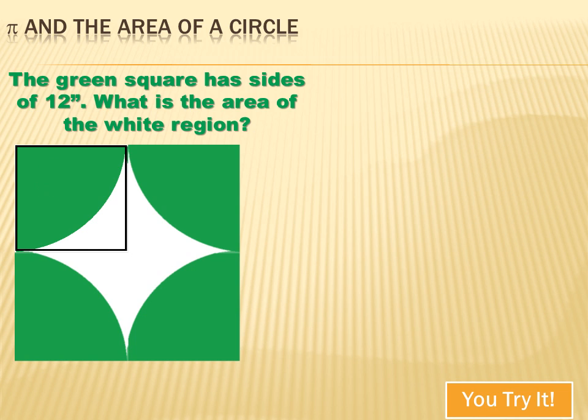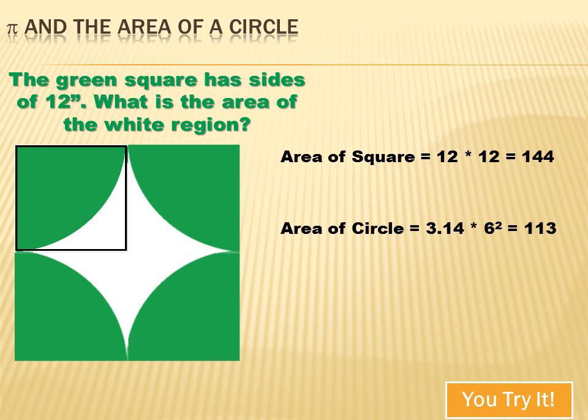But there are four of these. One, two, three, four. So we've really got a full circle, and we could calculate the area of that. It would be pi r squared. And we could calculate the area of the square. The area of the square would be 12 inches by 12 inches or 144 square inches. The area of the circle would be 3.14 times 6 squared, and that equals 113 square inches. So the only thing left is this white portion in the middle, and that would be the difference between the area of the square and the area of the circle, or 31 square inches.